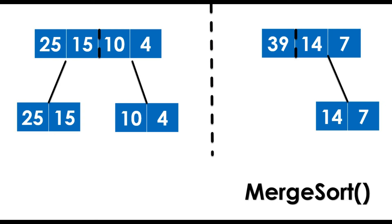Next, we use the Merge Sort function to divide the given array into two halves. In the left index, we separate 25 and 15 as well as 10 and 4. In the right index, since 39 is much higher than 14 and 7, we separate 14 and 7, and then 39 will be automatically separated from them.